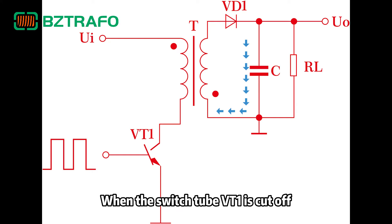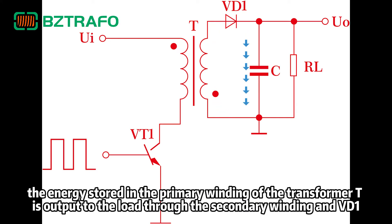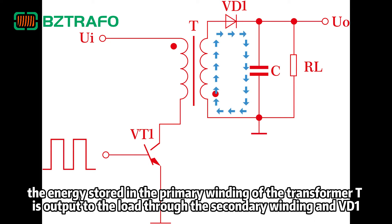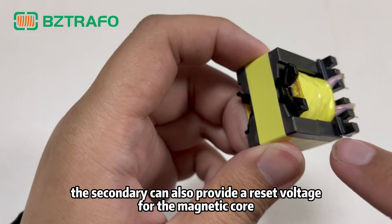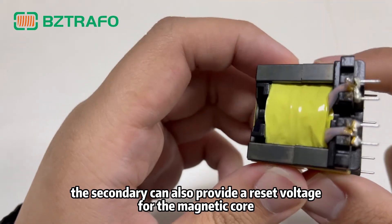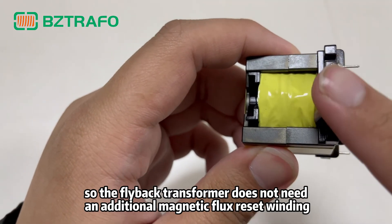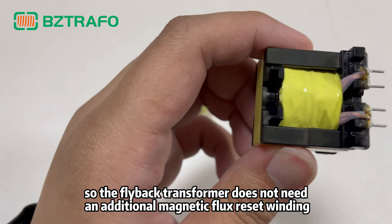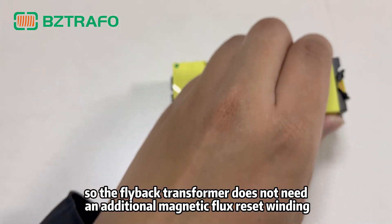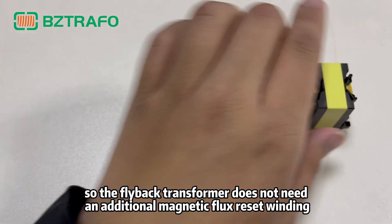When the switch tube VT1 is cut off, the energy stored in the primary winding of transformer T is output to the load through the secondary winding and VD1. In addition, the secondary can also provide a reset voltage for the magnetic core, so the flyback transformer does not need an additional magnetic flux reset winding.